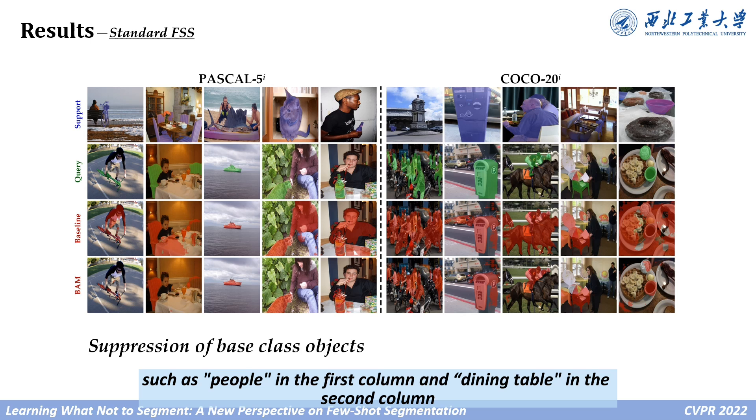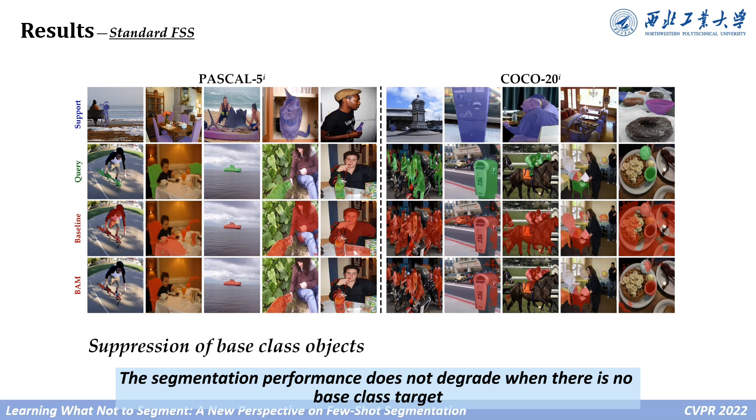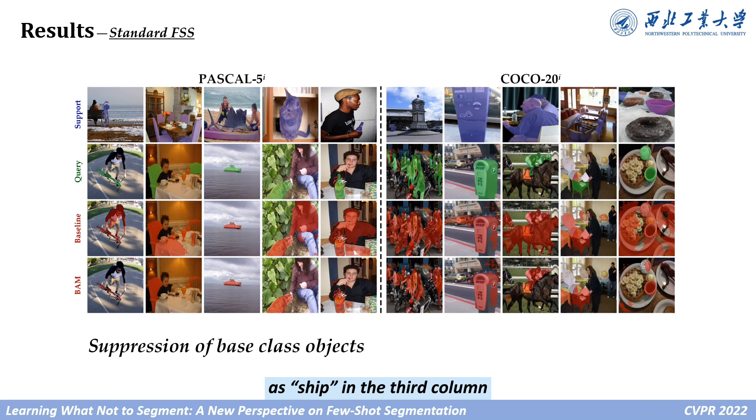such as people in the first column and the dining table in the second column. The segmentation performance does not degrade when there is no base class target, as shown in the third column.